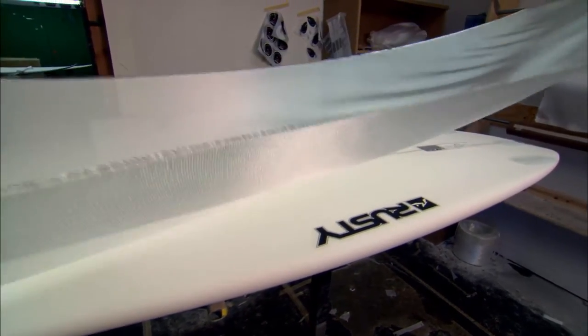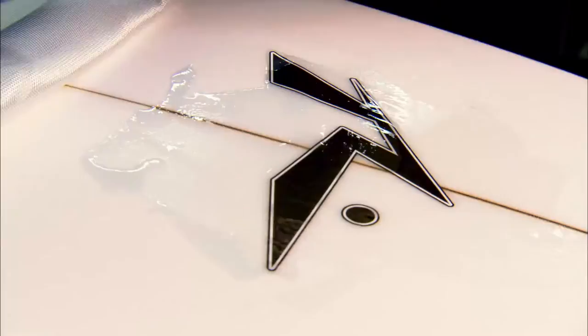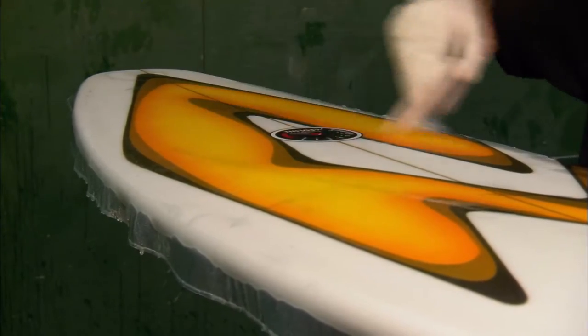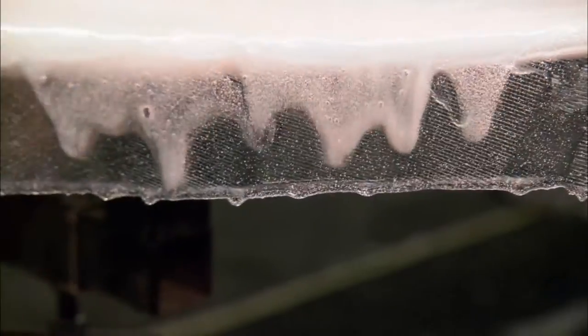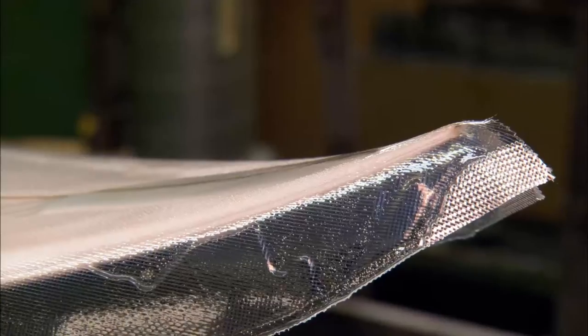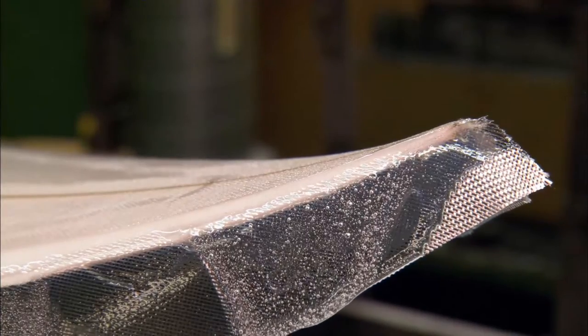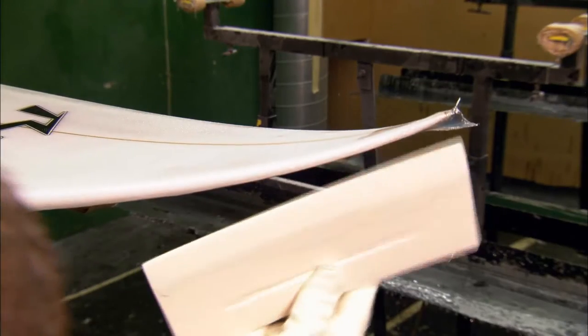To keep the foam board from breaking apart in the waves, the whole thing is strengthened with several layers of resin-soaked fiberglass cloth. The fiberglass cloth is made up of tiny strands of glass that are tightly woven together like cotton or wool fibers to make them super strong.